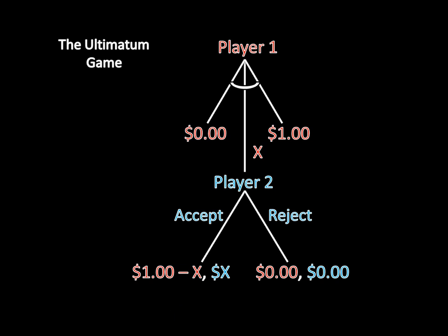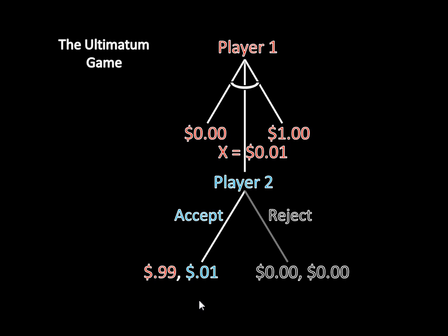If you've been following the videos on the Ultimatum game, if we're looking at just money here, we would expect the outcome to be player 1 offering 1 cent — so x equals 1 cent — player 2 accepting that offer, and player 1 walking away with 99 cents and player 2 walking away with 1 cent. The reason player 2 accepts is because 1 cent is worth more than 0 cents. Note that I specified we're only talking about money here — that's going to be important later.